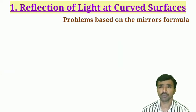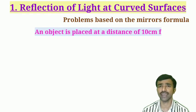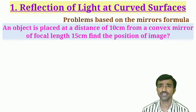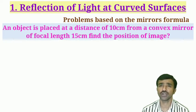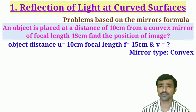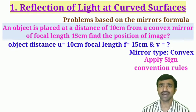Let me discuss one problem here. An object is placed at a distance of 10 centimeters from a convex mirror of focal length 15 centimeters. Find the position of the image. Here, position of the image is asked. Two physical quantities are given: object distance and focal length, and the type of mirror is also mentioned.